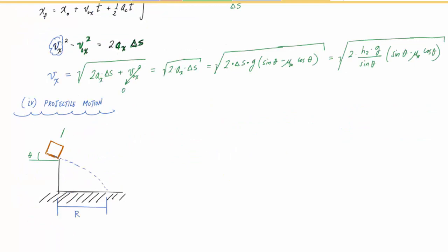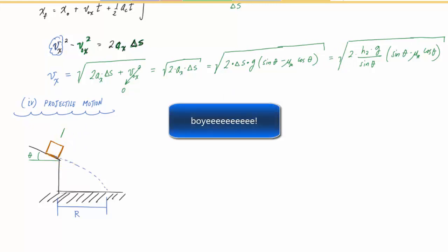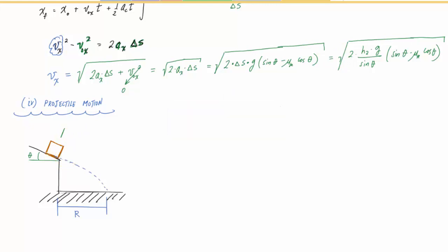Now I have to do the projectile motion problem. In the projectile motion problem, this particle leaves at a velocity Vx — that crazy-looking equation, which is really just a number. I'll call this new initial velocity V0 for the projectile motion problem. It's a brand new problem, and I'm given from here that V0 is the Vx from the previous problem.